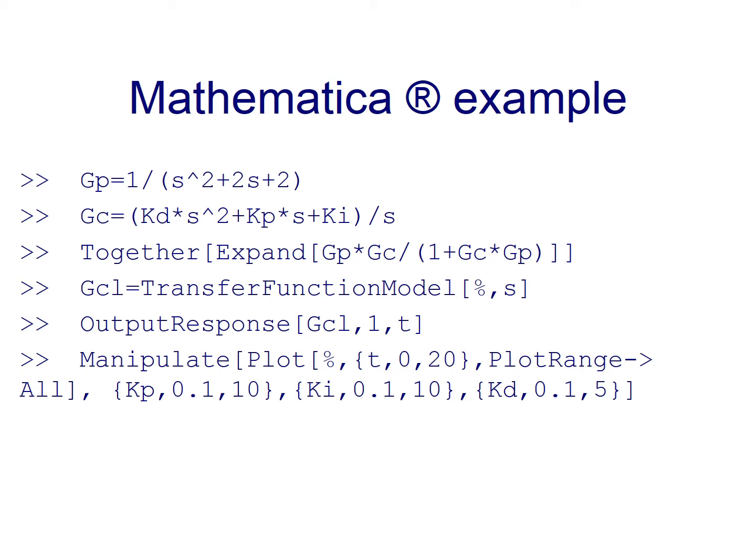And just in order to have some sliders, in order to allow us to change parameters in an easier way, I'm going to use manipulate instruction. And I'm going to plot the step response from 0 to 20 in time, and I ask Mathematica to plot range all. And finally, the range of the sliders for Kp, Ki and Kd, I'm going to put it from 0 to 10, from 0.1 to 10 and from 0.1 to 0.5.